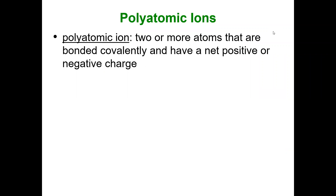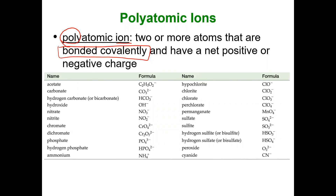To review: a polyatomic ion — poly meaning more than one atom, ion meaning it's charged. How does this group of atoms with a charge stay together? They're bonded covalently. So a polyatomic ion is a group of atoms held together covalently that carry a charge. Here are some of the common ones.